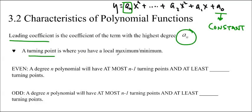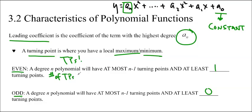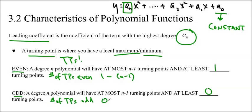A turning point is where you have a local maximum or minimum. An even degree polynomial will have at most n minus 1 turning points and at least one turning point — you have to have at least one turning point if it's an even polynomial. If it's an odd polynomial, it has at most n minus 1 turning points and at least zero turning points. So the number of TPs for an even is 1 to n minus 1, and for an odd is 0 to n minus 1.